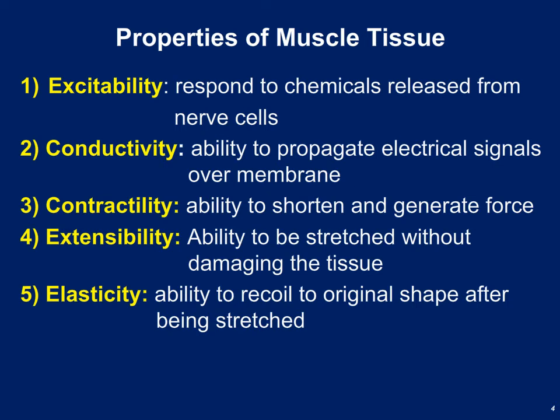Muscle tissue can also conduct electrical activity. Neurons transmit information through electrical impulses, but it's also important to realize that muscle cells can conduct an electrical impulse. Motor neurons signal skeletal muscle cells to contract through a nerve impulse and secretion of neurotransmitter. This muscle cell will become excited in response to the neurotransmitter, generate an action potential, and conduct that nerve impulse along the axis of the muscle cell.